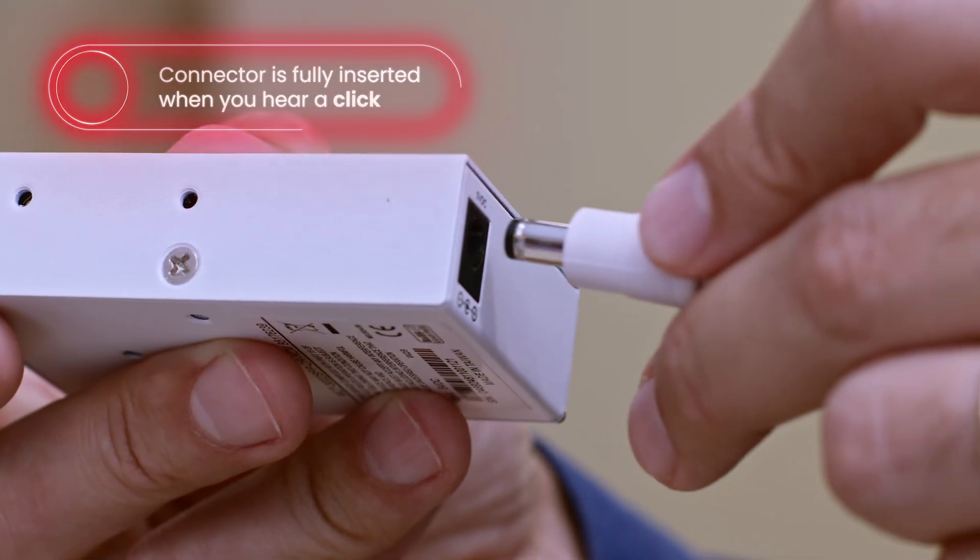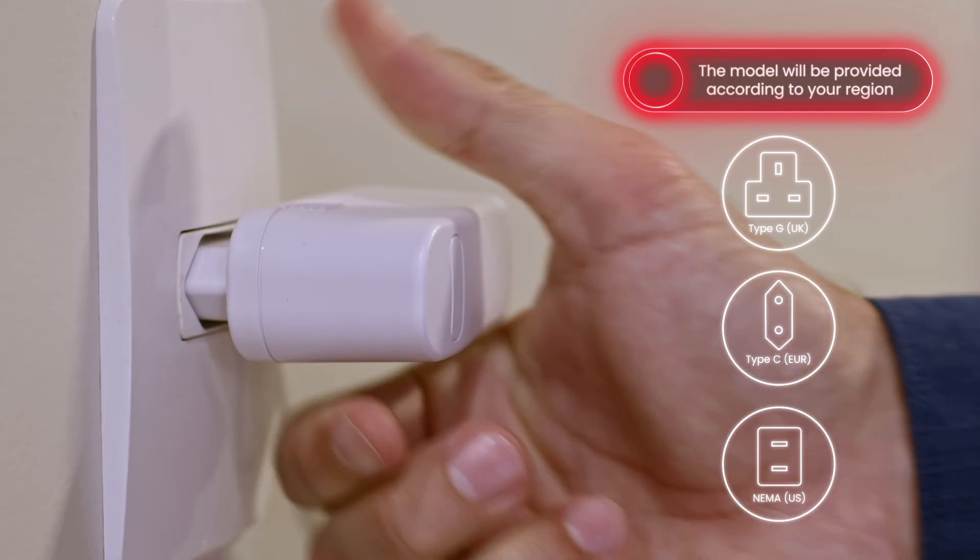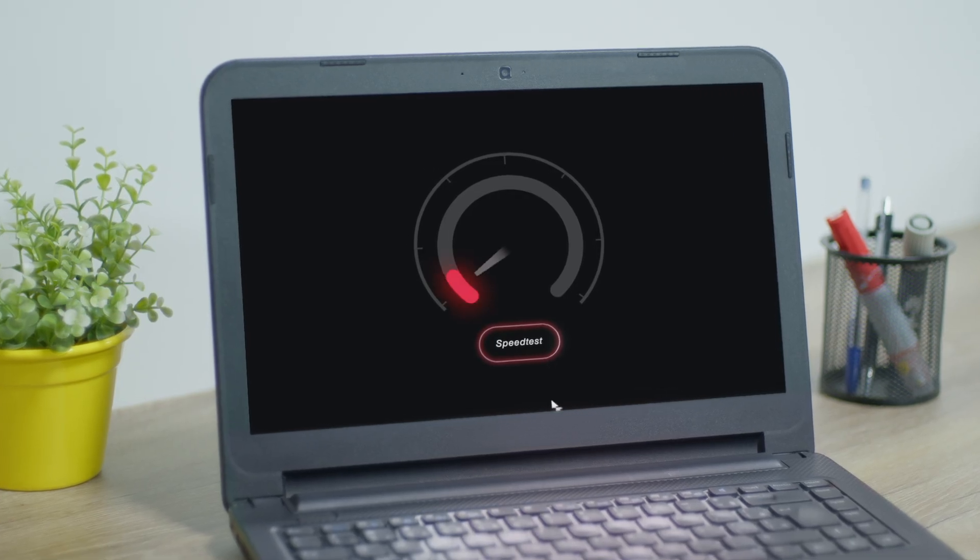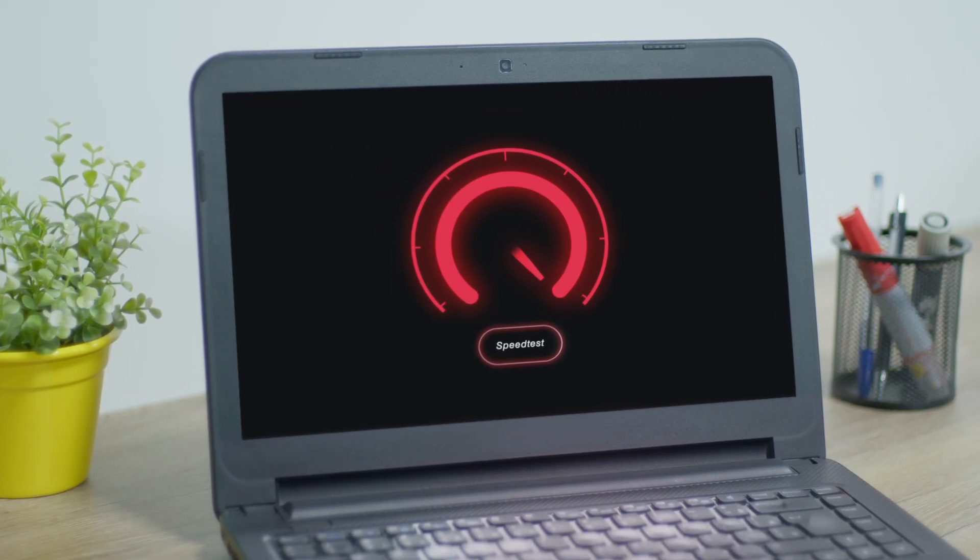Plug the media converters into power sources. There should be no need to change the dip switches on the media converters. If everything is connected correctly, all lights will be on. A guide to the lights is included in the documentation if troubleshooting is needed. On your device, check the connection status. If possible, perform a speed test to ensure everything is working properly.